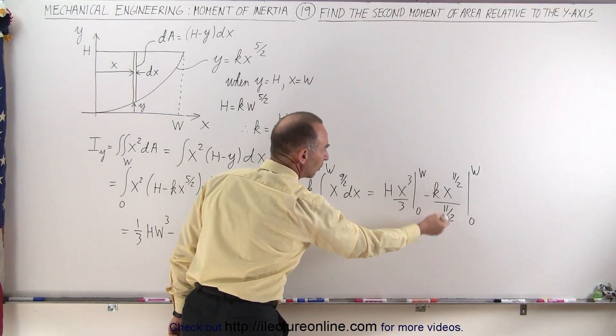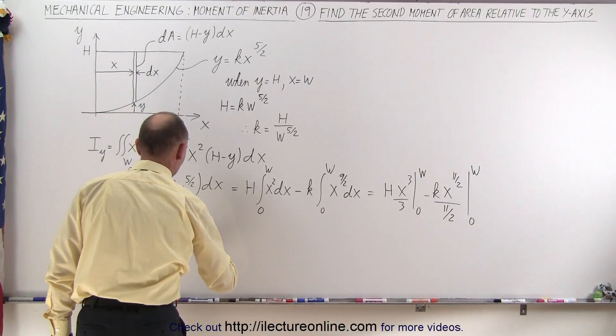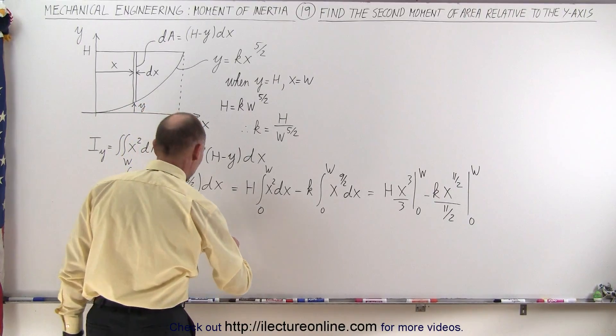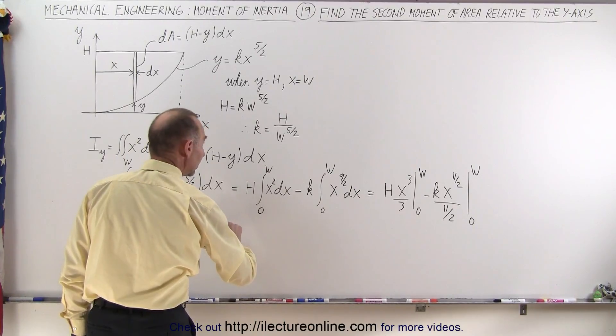Minus, when we bring that to the numerator, it becomes 2 over 11, so 2 divided by 11, times k, times, we plug in the limit, we get w to the 11 halves power.